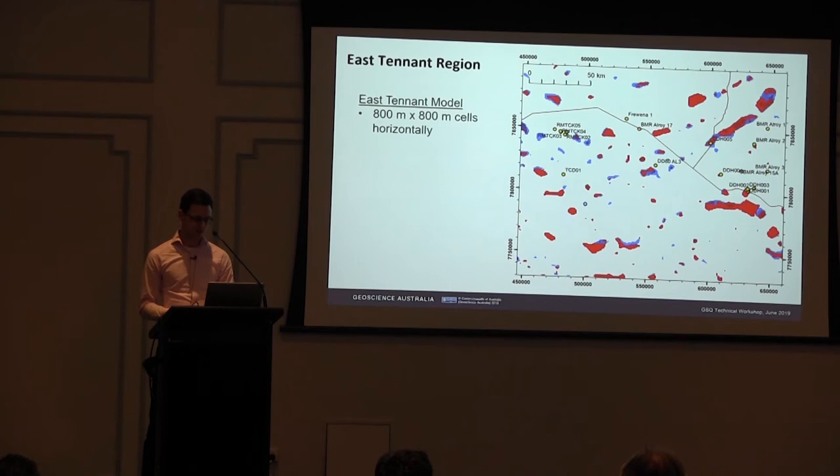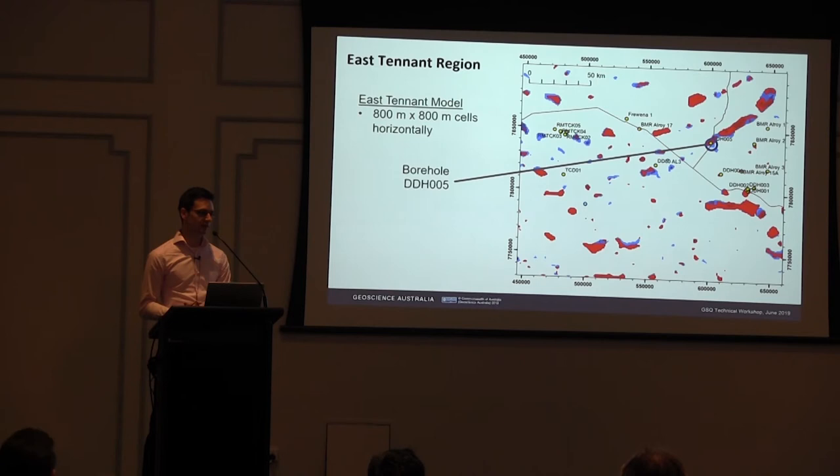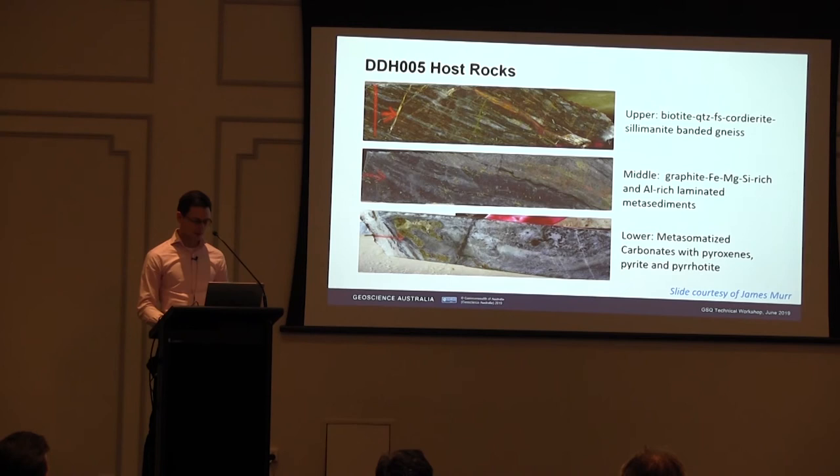In this area we also have a lot of legacy drill hole information. One of particular interest is borehole DDH5, which lies directly on top of one of the areas we've picked as having both magnetite and hematite alteration proxies lying on top of each other.